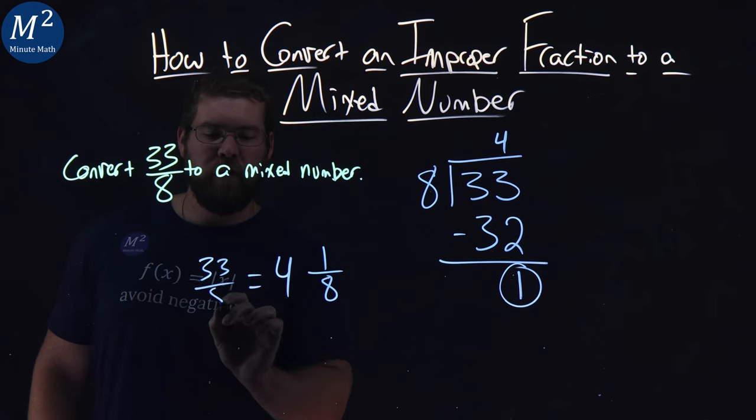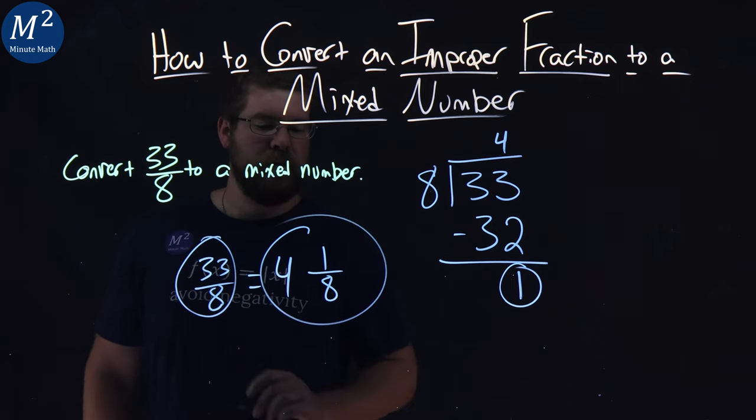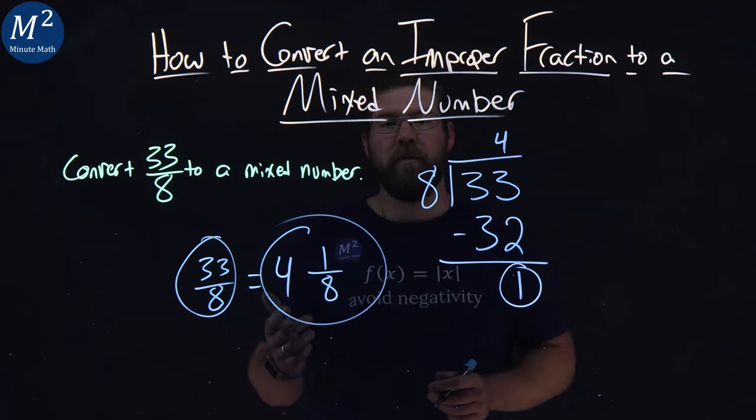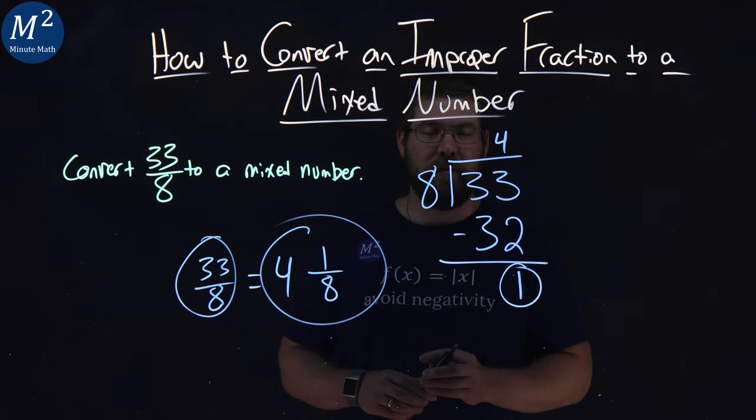And so, 33 over 8 is equal to 4 and 1 eighths.